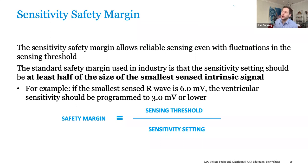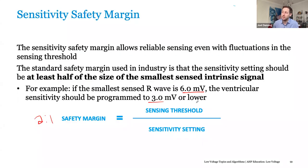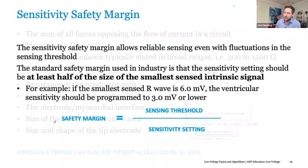There is also a safety margin with sensing as well, and we still use this two-to-one idea you see with capture. In general, if you have an R wave that's six millivolts, you may set your sensing at half of that — three millivolts. That just ensures you may be able to sense when those values change, just like capture, sensing can change over time. It can be positional, it could be disease progression. If you just set it at five millivolts, we may be under-sensing when the patient is lying prone, which means we could be pacing into vulnerable periods or pacing when the patient doesn't need to pace. Everything in pacing generally uses a two-to-one margin.